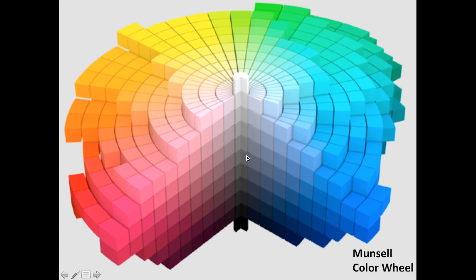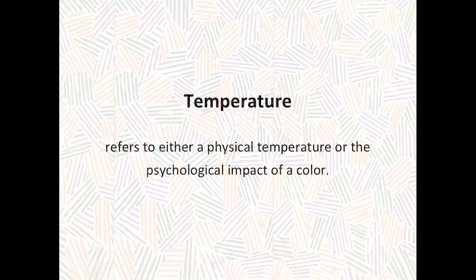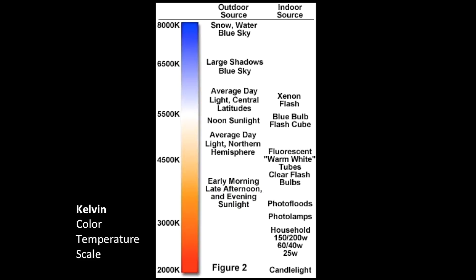Essentially, black is being added to darken colors and white to lighten them, and three-dimensional color wheels exist as well. Another important aspect of color is color temperature — both a physical temperature measured on the Kelvin scale and the psychological impact of color. Color temperature is important in creating the illusion of space.